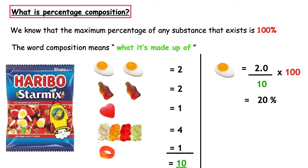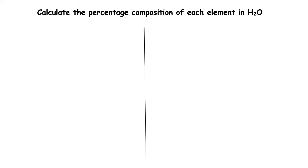The same thing happens when we're looking at the percentage composition of elements which are found in compounds. I'm going to go through four worked examples showing you how to calculate the percentage composition of each element in a compound when you have been given the chemical formula. The first one is to calculate the percentage composition of each element in H₂O.